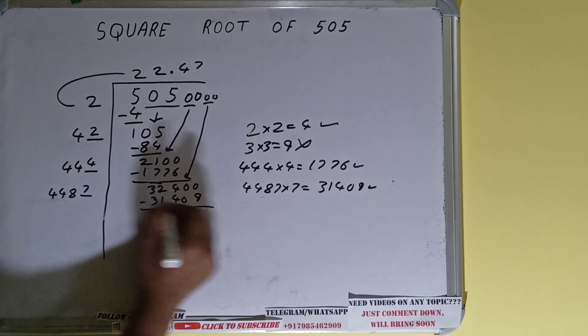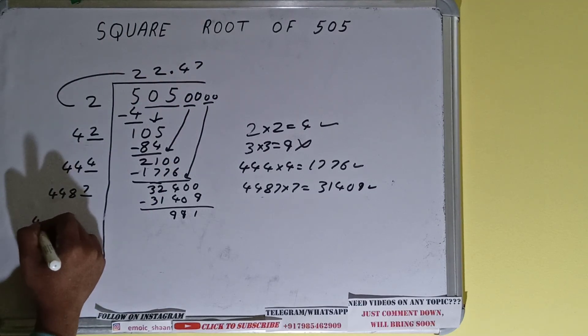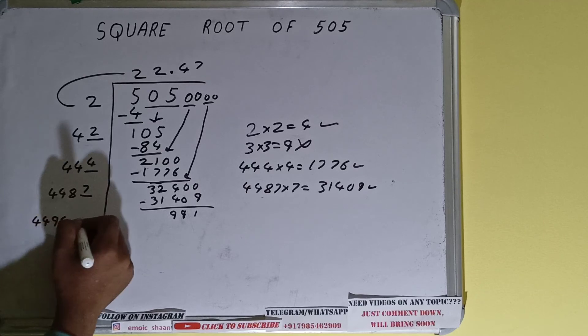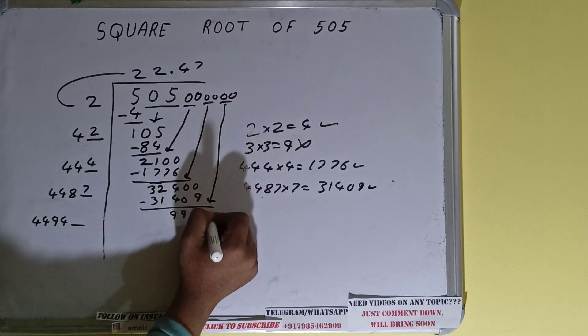And 9991 will be left. Now 44,487 into 7, so add both. So 44,487 plus 7 will be 44,494, and one digit extra. And this number we need to make it big. So bring the next pair of zeros down and it will become as 99,100.